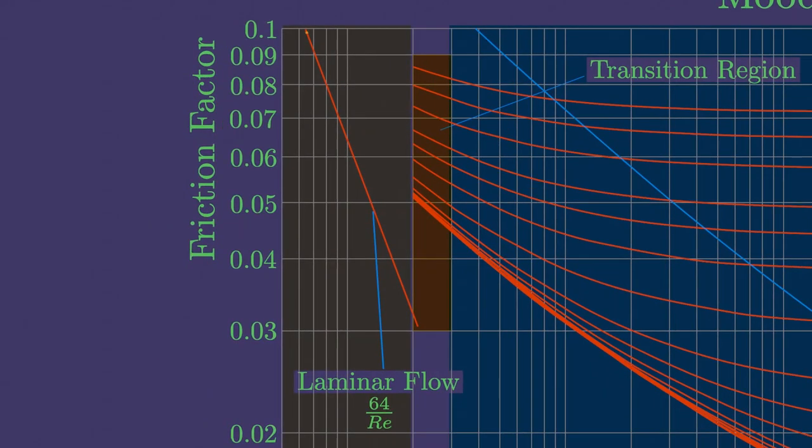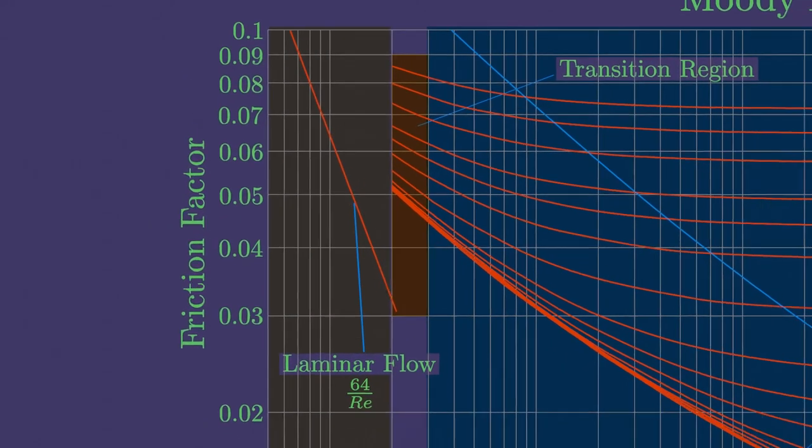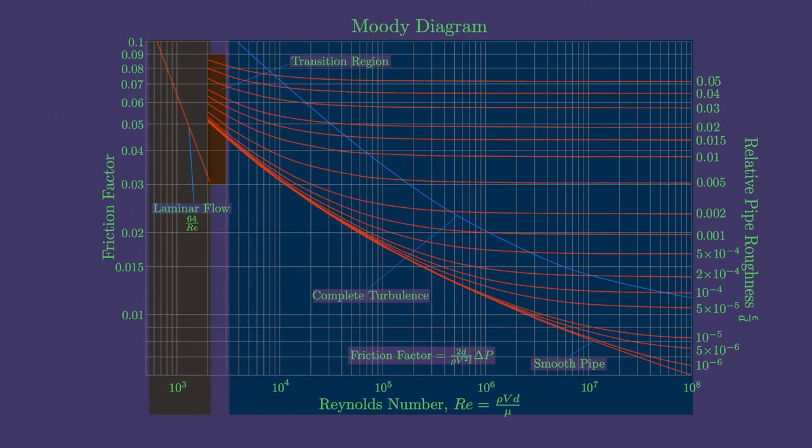For laminar flow, the friction factor decreases with increasing Reynolds number, and it is independent of surface roughness of pipe.